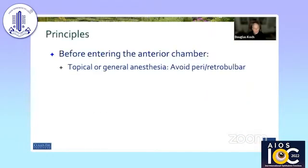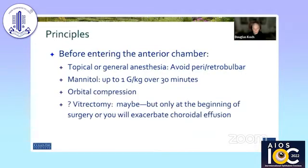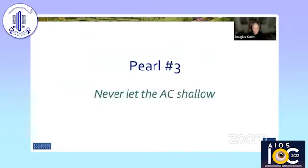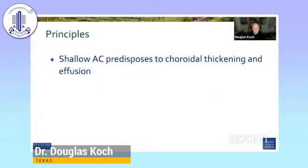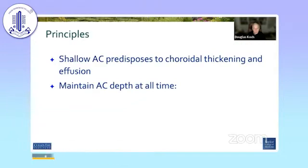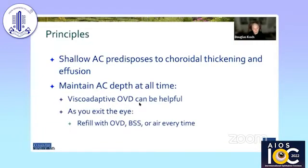You must maintain really good anterior chamber depth when operating on these eyes — mannitol and all the standard measures. Be very cautious about vitrectomy; the anatomy of the choroid is uncertain in these short eyes, and vitrectomy can exacerbate a choroidal effusion. Never let the chamber shallow — a shallow chamber predisposes to choroidal thickening. Injecting viscoelastic OVD can be helpful, and as you exit the eye, always refill with OVD, BSS, or even air so the chamber never shallows.